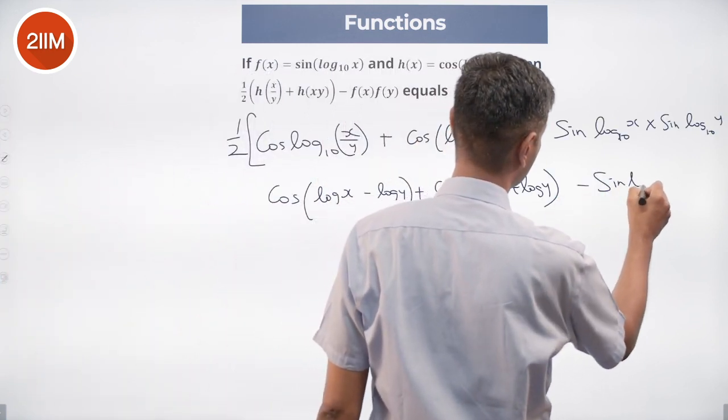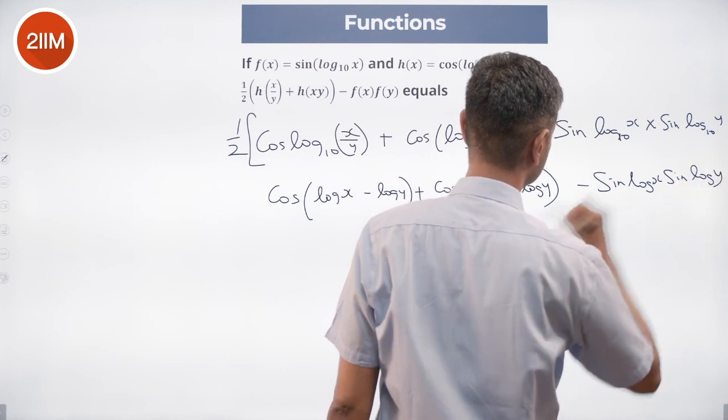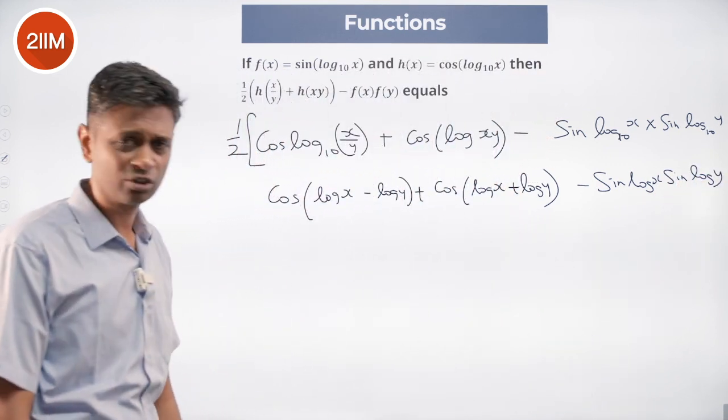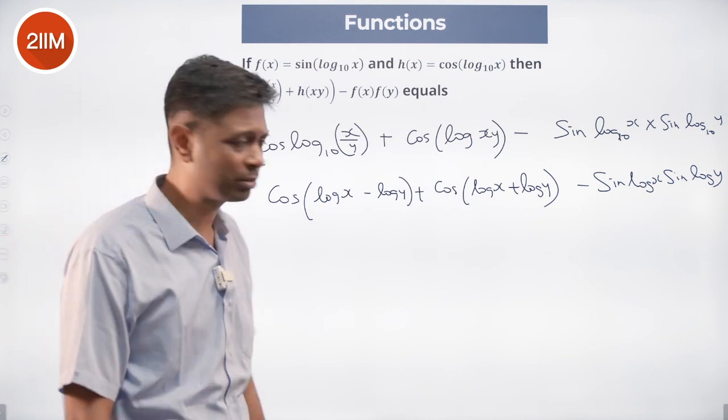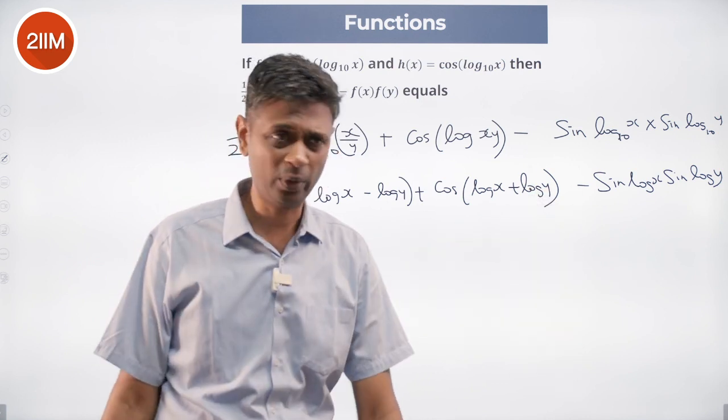Minus sin(log x) into sin(log x) into sin(log y). Nice, this is cos(log x - log y)—that's log x minus log y minus sin(log x) into sin(log y).